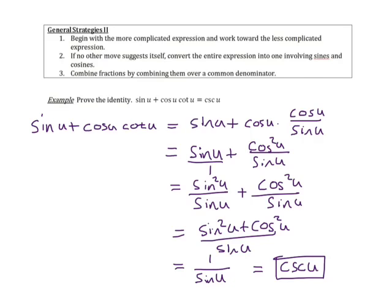One over sine of u equals cosecant of u by the reciprocal identity, so the left hand side has become the right hand side. This shows a useful pattern: when you have two terms and you want one term, try making them into fractions with a common denominator — combining them can reveal a simplification.